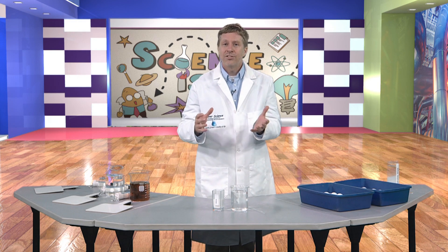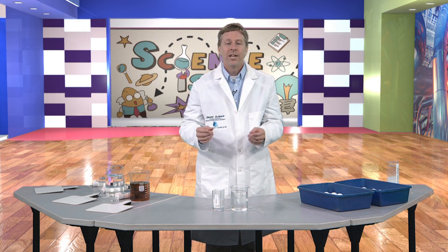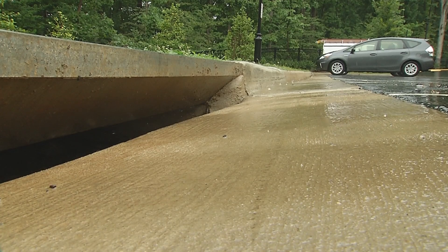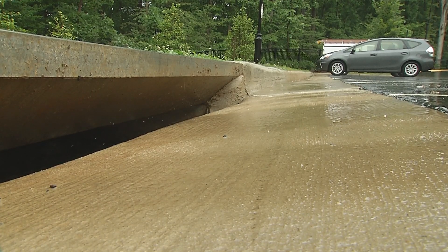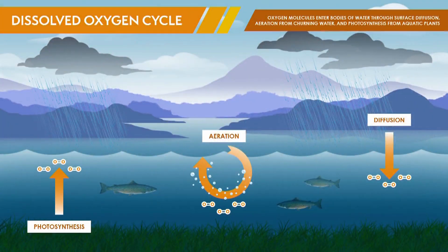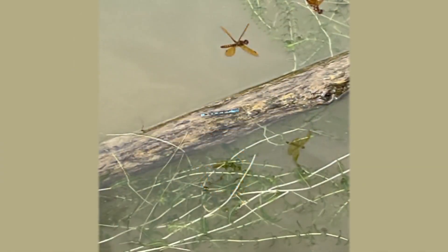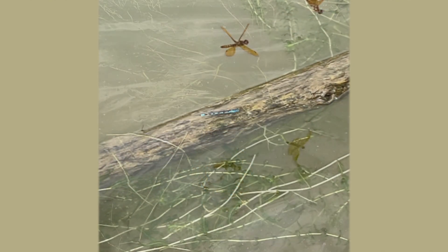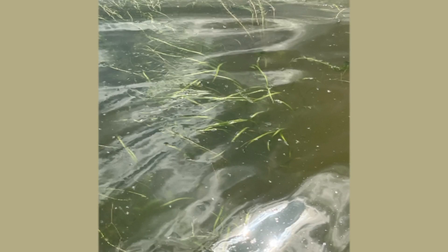Let's take a look at the dissolved oxygen cycle to see the different ways dissolved oxygen enters our waterways. One way is through rain — during a rainstorm, water flows off the land and runs into streams, rivers, and oceans. This movement of water, waves, and wind causes the water to connect with air, which helps change the oxygen in the air into dissolved oxygen in the water.